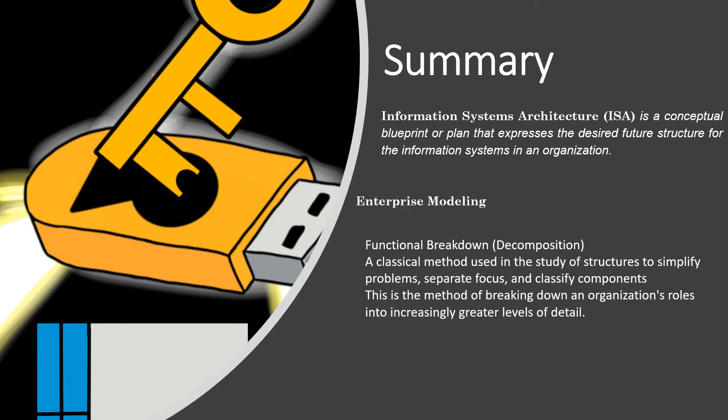To summarize: the Information System Architecture, or ISA, is a conceptual blueprint or plan that expresses the desired future structure for the information system in an organization. In enterprise modeling, we have the functional breakdown or decomposition, which is a classical method used to simplify problems, separate focus, and classify components — breaking down an organization's roles into increasingly greater levels of detail.